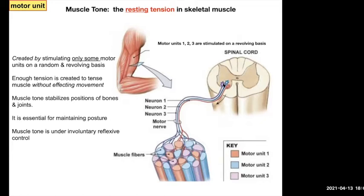If there were only three of them cycling, you could maintain the same level of contraction by just keep stimulating the purple one, but the purple one would get all tired. So you want to share that stimulation — some motor units on a random and revolving basis.